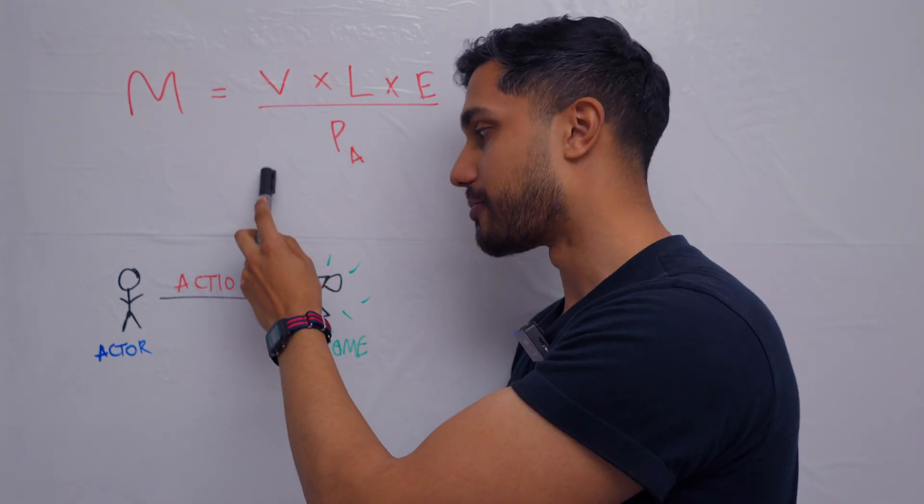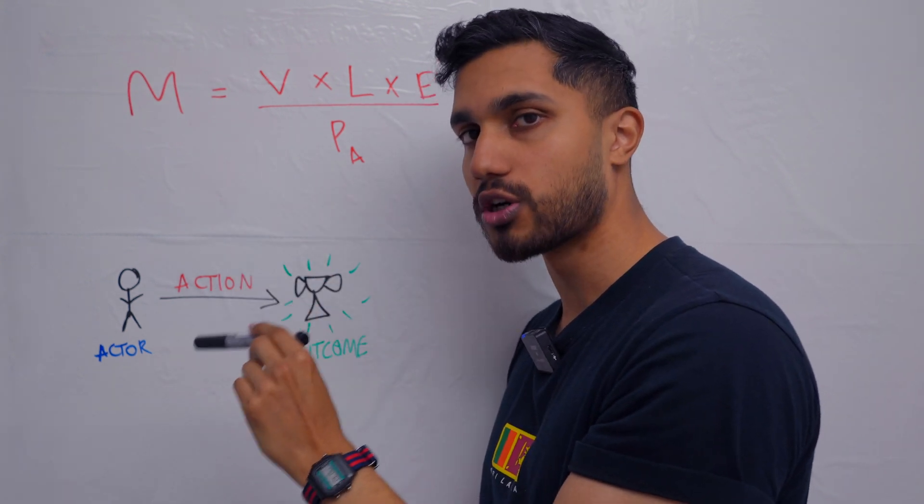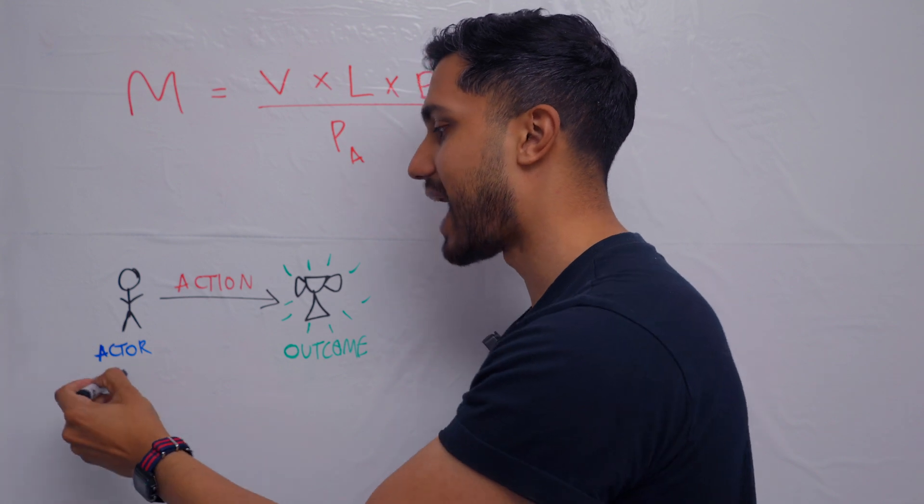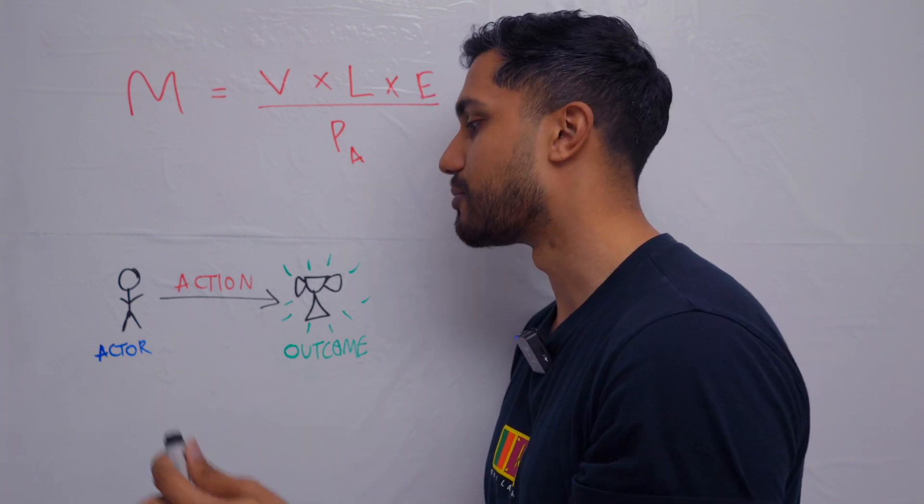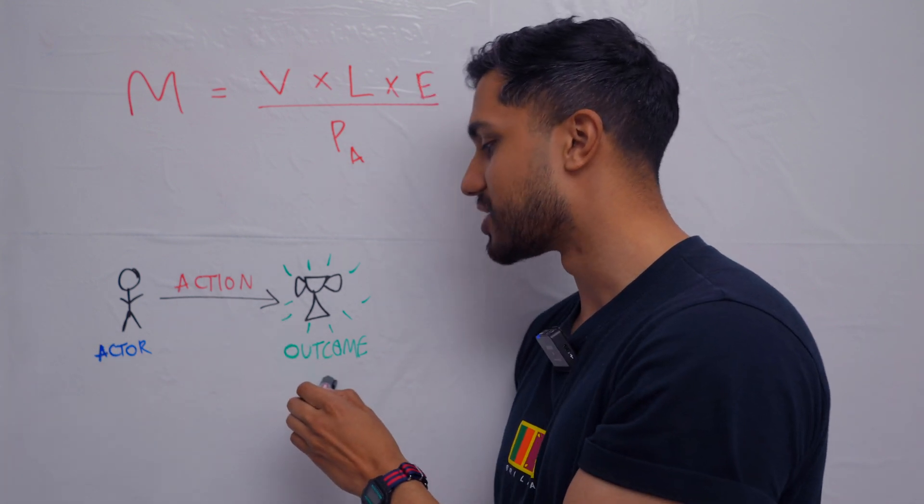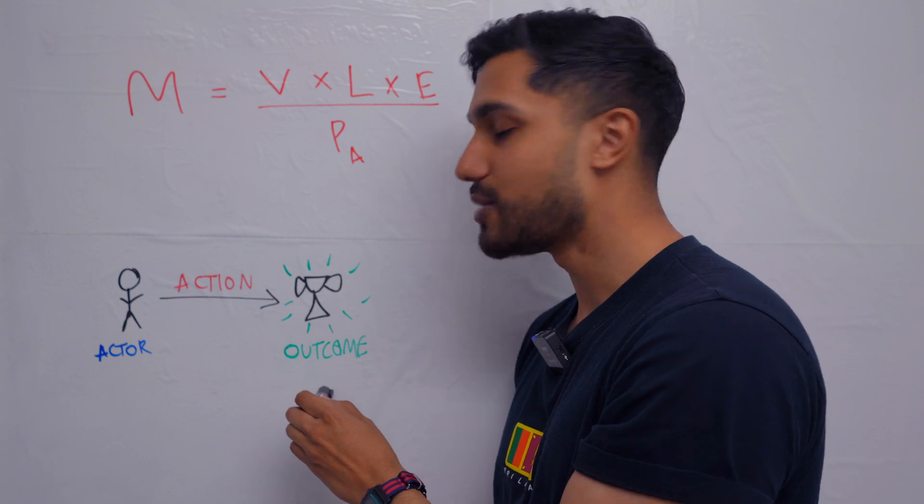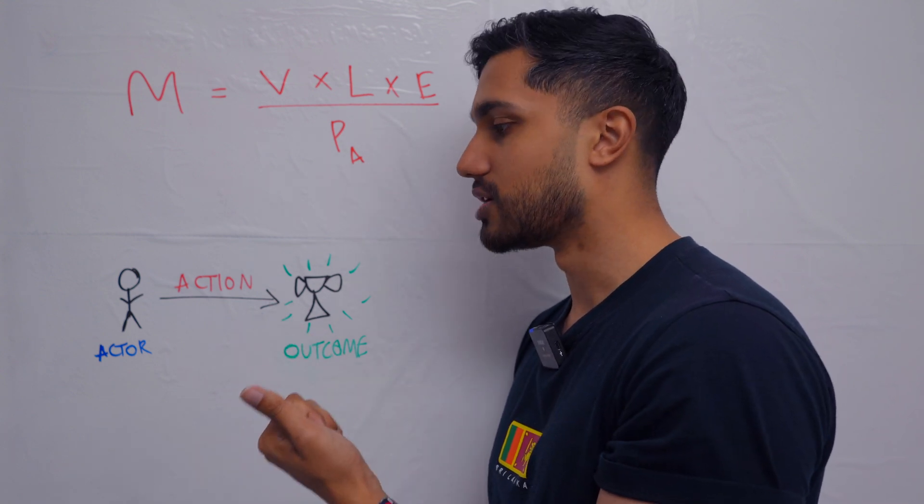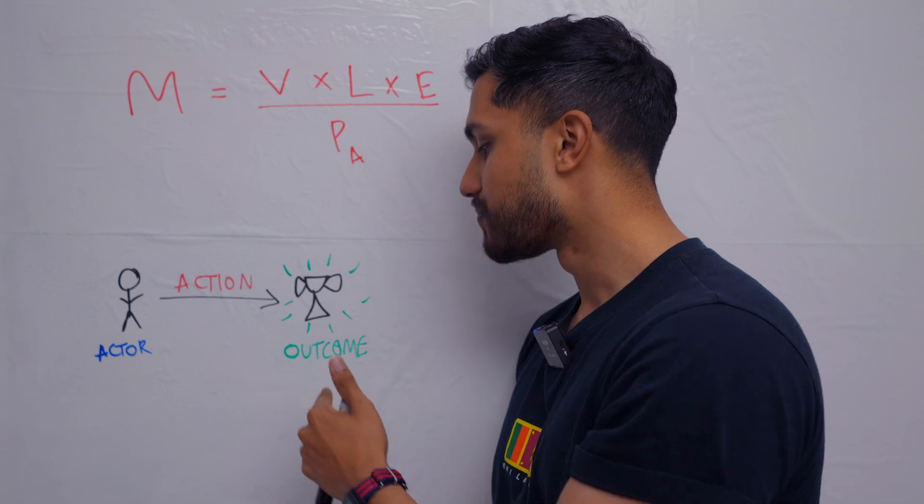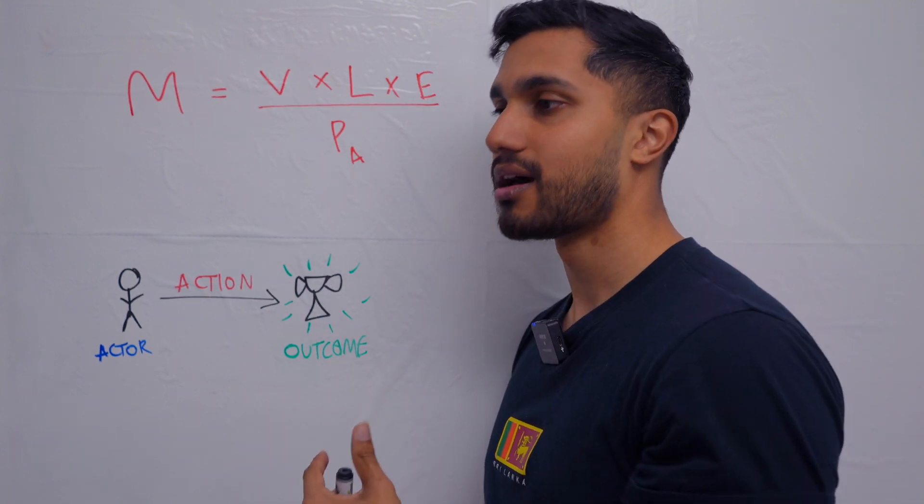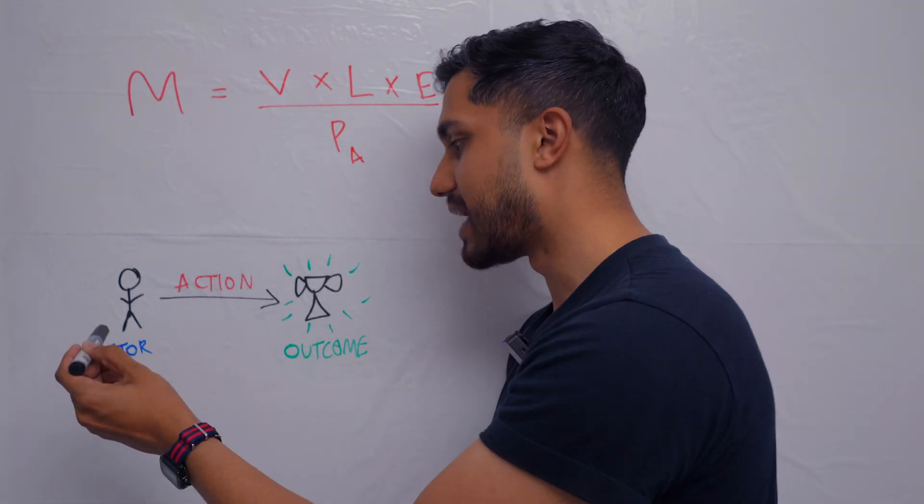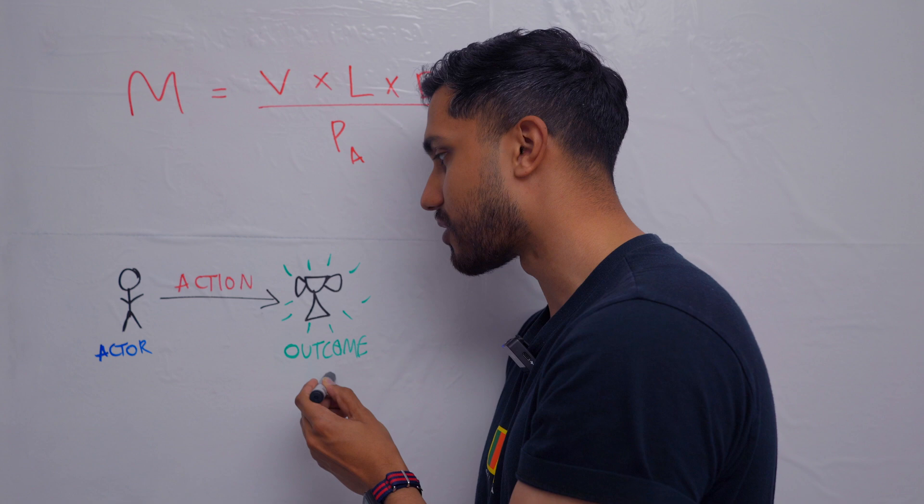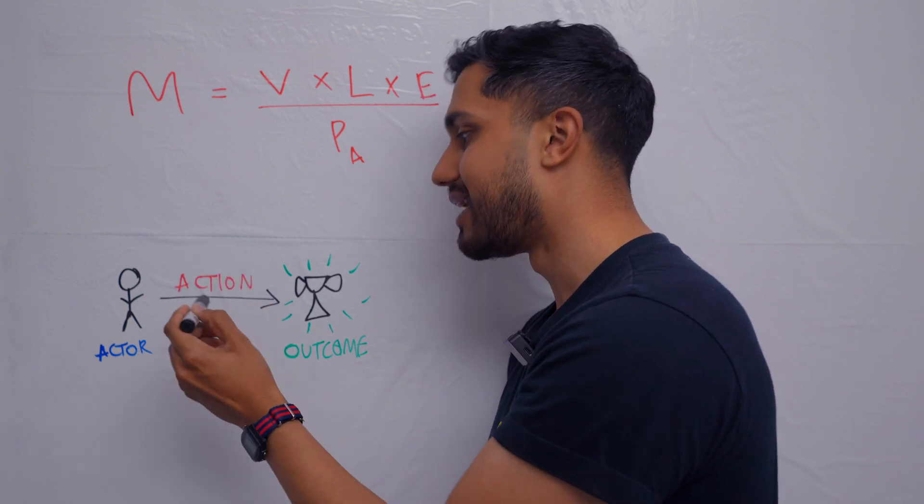Before I explain the formula, I need to explain what goal-directed behavior is. You have an actor—a human or an animal or whatever—and they want to accomplish a particular outcome. They want to get either an extrinsic outcome of more money or a better body, or an intrinsic outcome like feeling good. If the actor wants to get this outcome, it needs to complete an action.